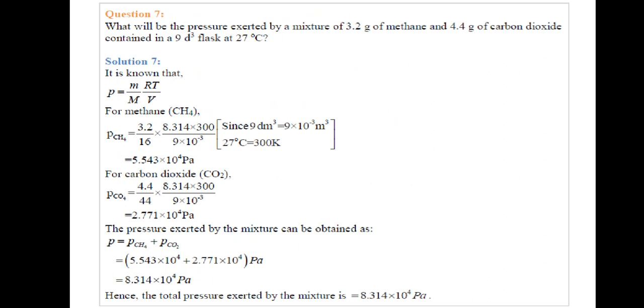Now for methane, 3.2 given mass upon molecular mass 16 times R 8.314 times 300 temperature upon volume 9 times 10^-3. Since 9 decimeter cube equals 9 times 10^-3 meter cube and 27 degrees centigrade equals 300 kelvin. Pressure exerted by CH4 is 5.543 times 10^4 pascal.